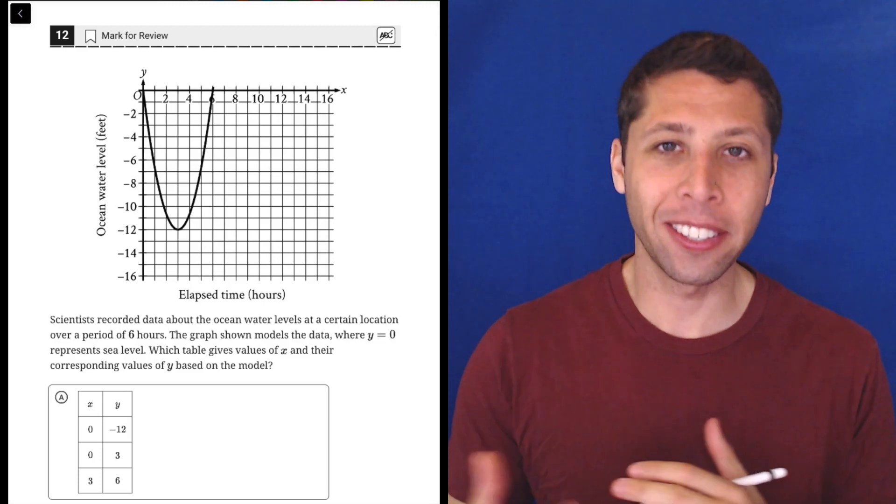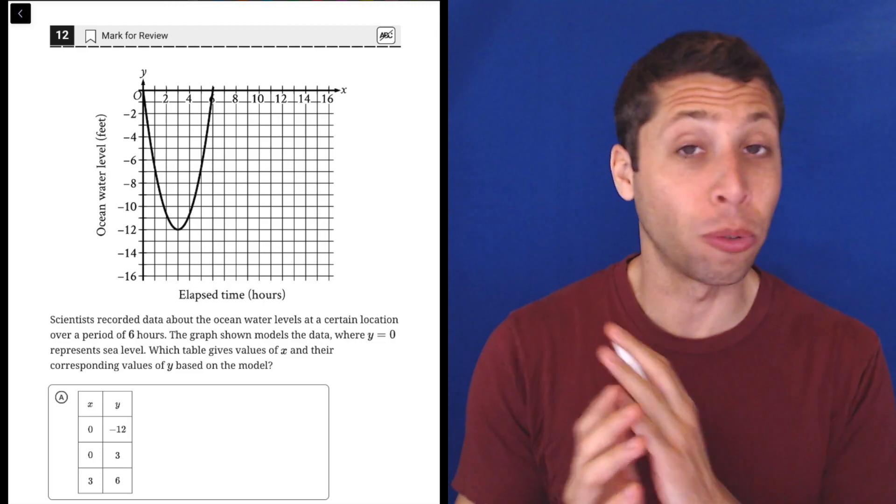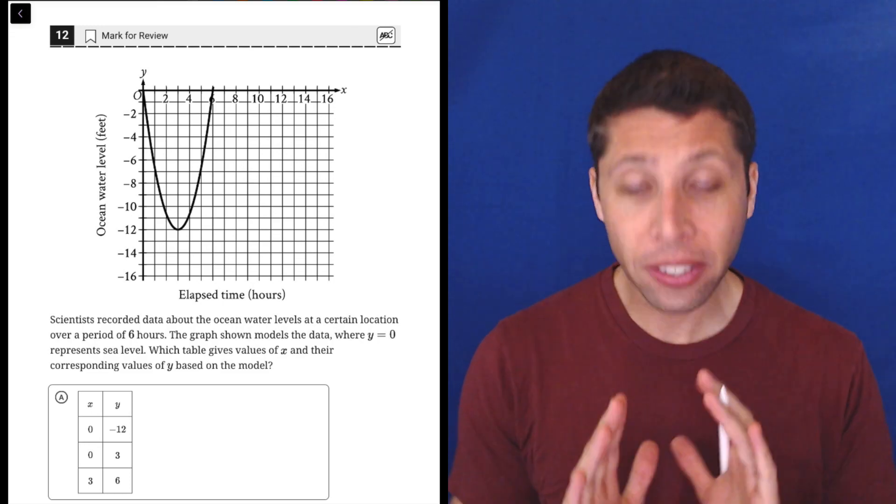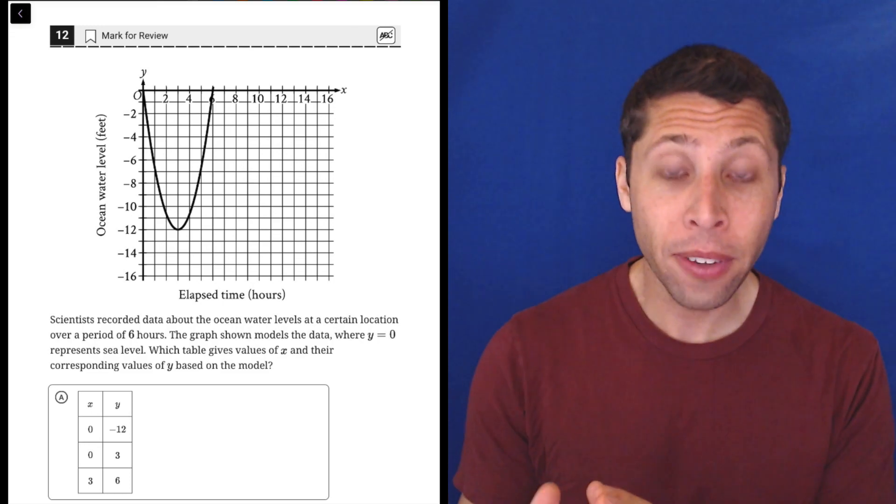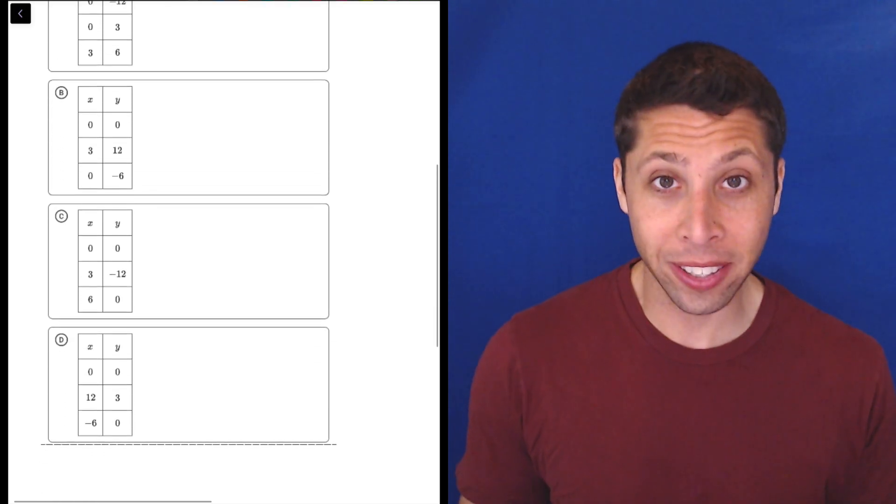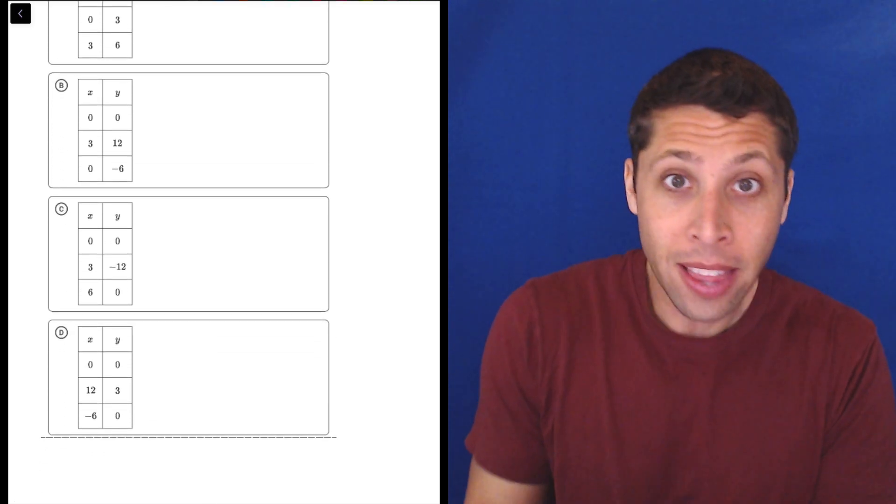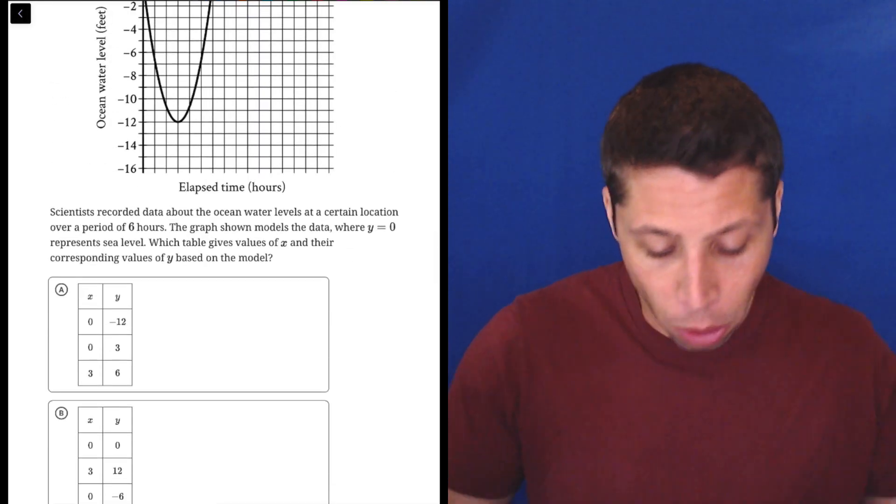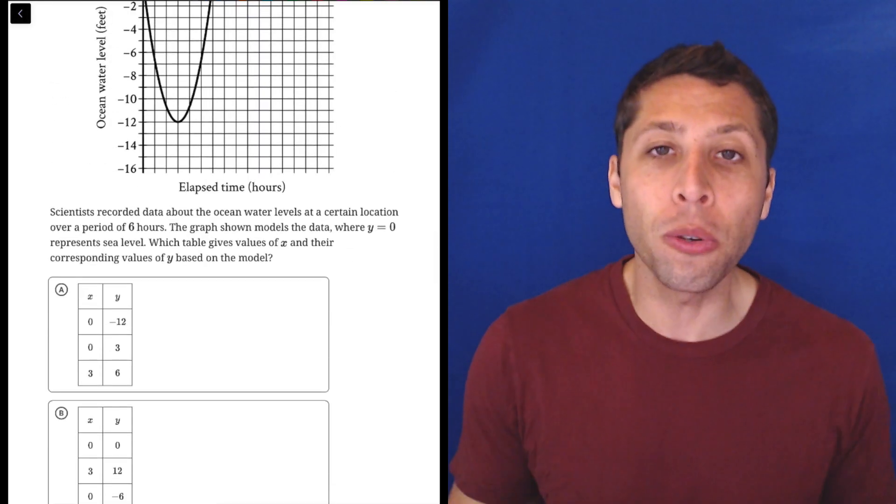This is another example of how the SAT and PSAT take questions that are really simple and make them seem more complicated by adding a story. Basically all we've got here is a graph and then a bunch of answer choices that are supposed to include points that we would see on that graph. I don't care what this has to do with ocean water levels. That has nothing to do with anything.